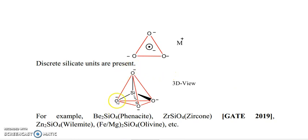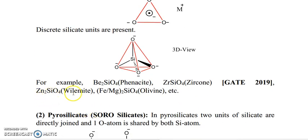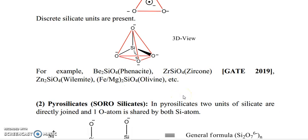In 3D view, you can see this is oxygen, oxygen, oxygen, oxygen, and the silicon atom — giving SiO₄⁴⁻. For example, Be₂SiO₄ is known as phenacite; ZrSiO₄ is known as zircon. In the 2019 GATE exam they asked what type of silicate zircon is — the answer is orthosilicate. Also, Zn₂SiO₄ is willemite, and FeMg₂SiO₄ is known as olivine — these are all examples of orthosilicate.